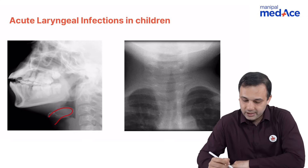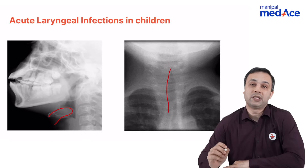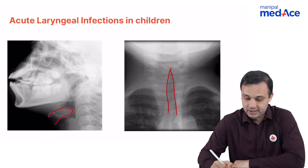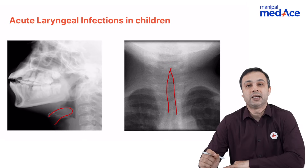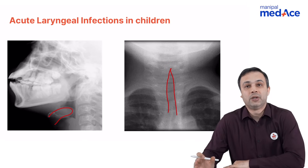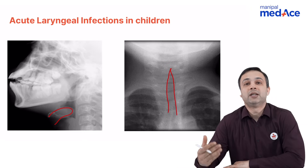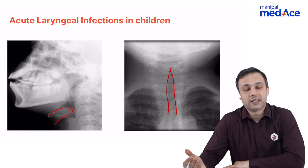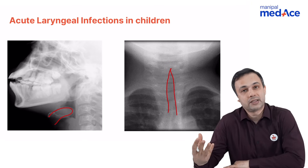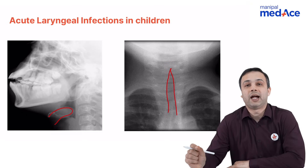When you talk about acute laryngotracheobronchitis, it is usually caused by the parainfluenza virus. When you look at this x-ray, you see a characteristic steeple sign which is seen in acute laryngotracheobronchitis. These children usually come with a biphasic stridor. You treat them with steroids and inhalational adrenaline.